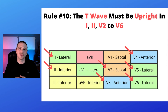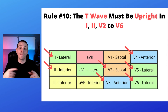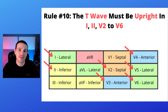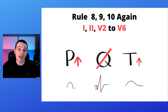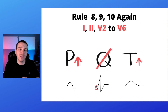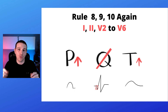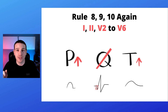Finally, rule number 10: all the T waves must be upright in leads one, two, and V2 through V6. So to recap rules eight, nine, and ten: we want all the P waves in leads one, two, and V2 through V6 to be upright. We don't want to see a Q wave or only a very small Q wave. And we want all our T waves to be upright.